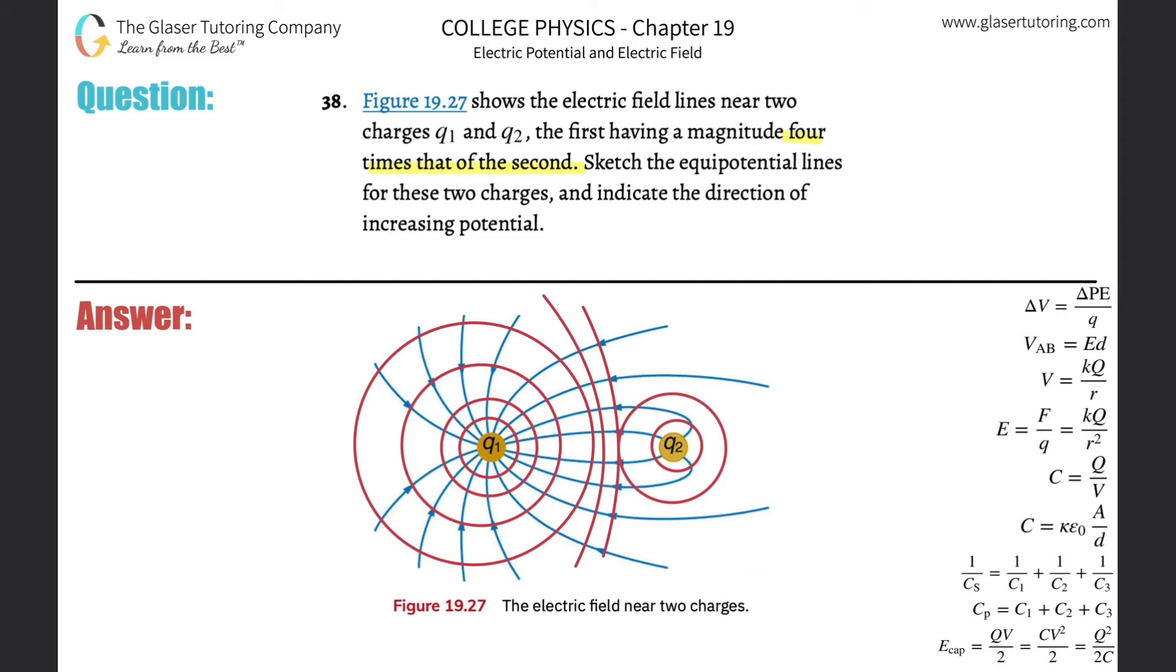And then it says to show the direction of the increasing potential. Remember, if you know the direction of the electric field lines, they always point towards decreasing potential, and therefore the increasing potential would be pointing in the exact opposite direction like so.